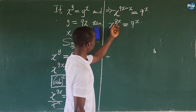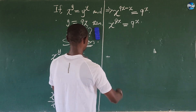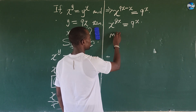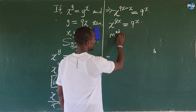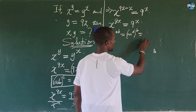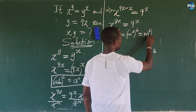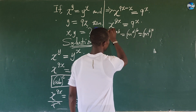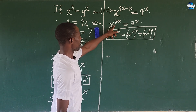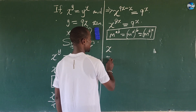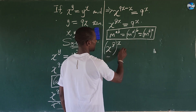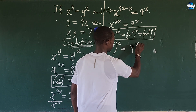Now let's rewrite the left-hand side exponent. According to the law, m to the power of a·b is the same as (m to the power of a) to the power of b, which is also the same as (m to the power of b) to the power of a. Applying this, we can rewrite x to the power of 8x as (x to the power of 8) to the power of x, giving us (x^8)^x equal to 9 to the power of x.